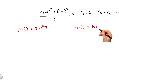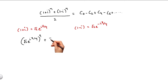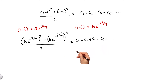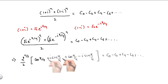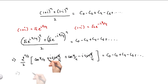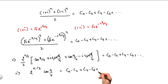We know that 1+iota can be written as √2·e^(iπ/4) and 1−iota as √2·e^(−iπ/4). Substituting these on the left-hand side, we get [√2·e^(iπ/4)]^n + [√2·e^(−iπ/4)]^n all divided by 2. Expanding the exponential terms, the imaginary parts cancel and the left-hand side simplifies to 2^(n/2)·cos(nπ/4), which equals c0 − c2 + c4 − c6 and so on.